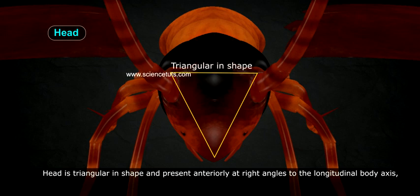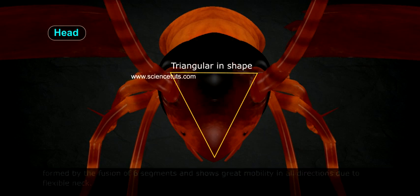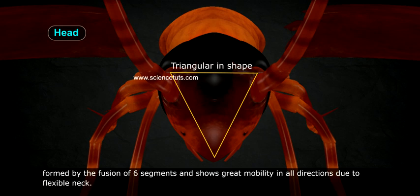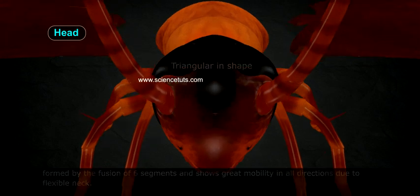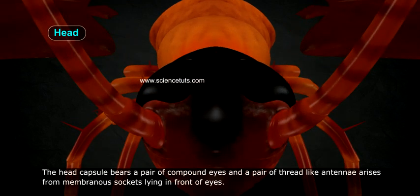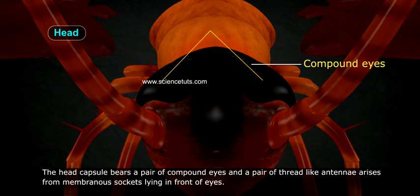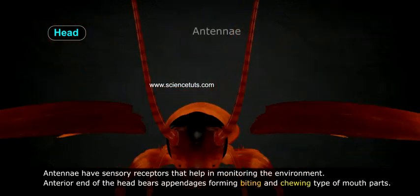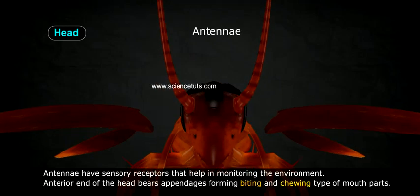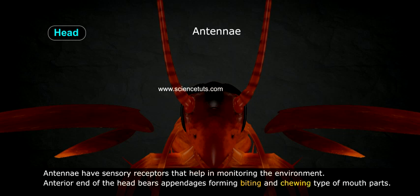The body of the cockroach is segmented and divisible into three distinct regions: head, thorax, and abdomen. The head is triangular in shape, present anteriorly at right angles to the longitudinal body axis, formed by the fusion of six segments, and shows great mobility in all directions due to a flexible neck. The head capsule bears a pair of compound eyes and a pair of thread-like antennae arising from membranous sockets in front of the eyes. Antennae have sensory receptors that help in monitoring the environment.